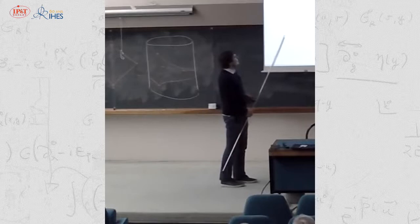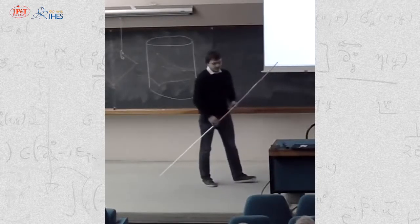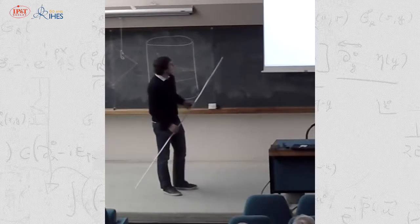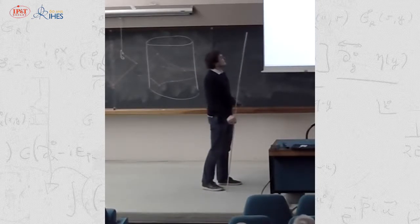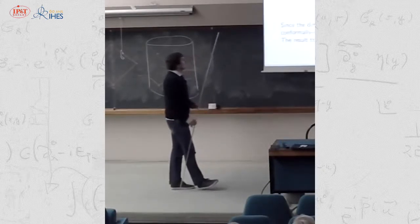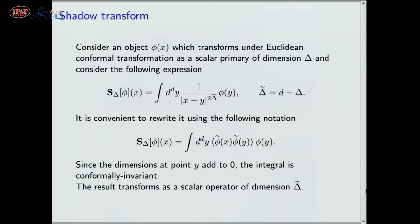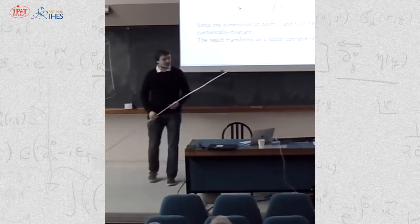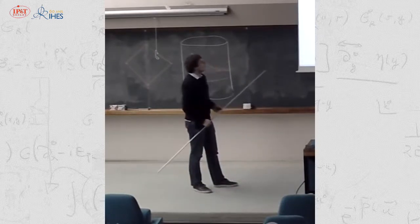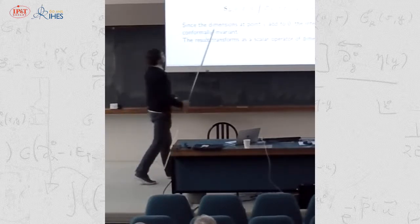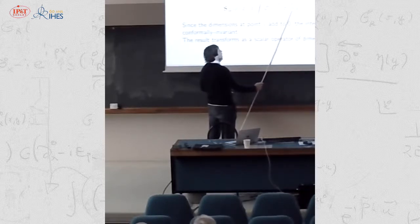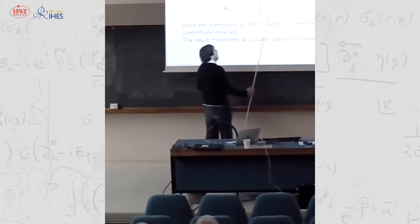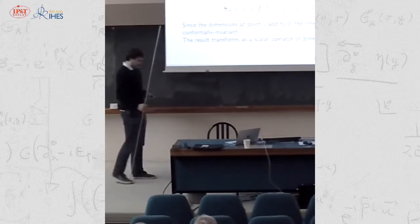The importance of this transform comes from the fact that if we assume that φ transforms as a scalar primary operator of dimension Δ, then this transform is conformally invariant and it produces an object which transforms as a scalar function with dimension Δ-tilde, which is equal to d minus Δ. To see this, it's convenient to write the integral in a slightly different form where we recognize that this kernel is the conformally invariant two-point function of a scalar primary with dimension Δ-tilde. The integral is conformally invariant because at point y we have φ of dimension Δ and Δ-tilde summing to d, which cancels the dimension of the integration measure.